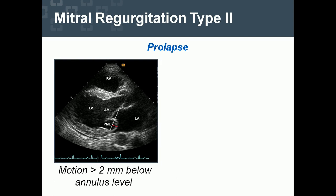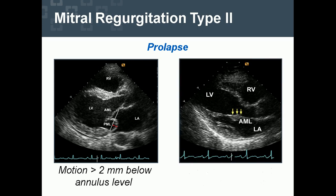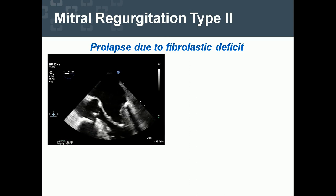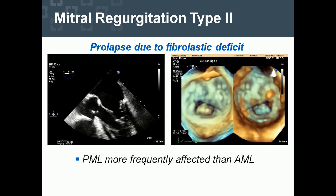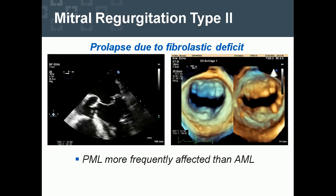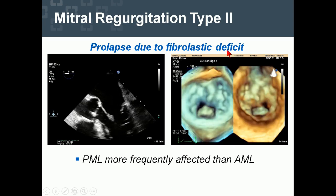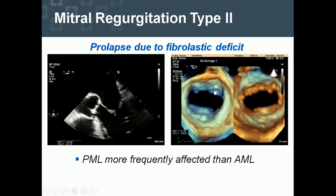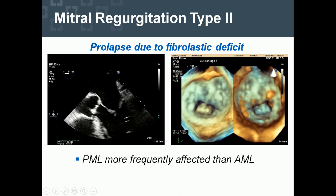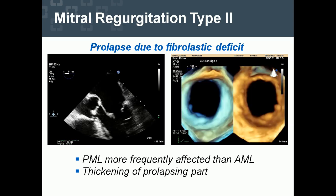Mitral regurgitation type 2 — prolapse. Prolapse means motion of parts of the mitral valve of more than 2 millimeters below the annulus level. It may be combined with myxomatous degeneration, characterized by thickening of the leaflet of more than 5 millimeters. Type 2 prolapse due to fibroelastic deficit: the posterior mitral leaflet is more frequently affected than the anterior mitral leaflet. This is the standard 3D view of the mitral valve — the so-called aortic view from the left atrium, which directly corresponds to the Carpentier scheme. Thickening of the prolapse segment is typical.